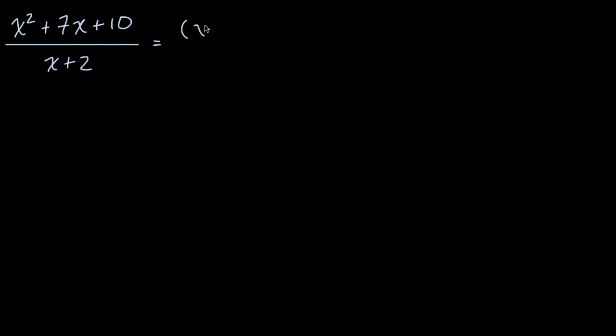So we could rewrite that numerator as x plus two times x plus five, and then of course the denominator you still have x plus two. And then we clearly see we have a common factor.